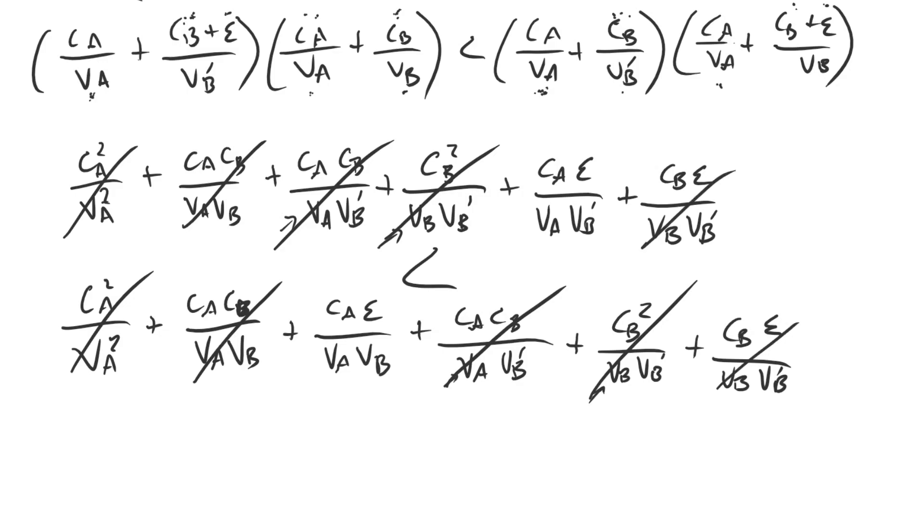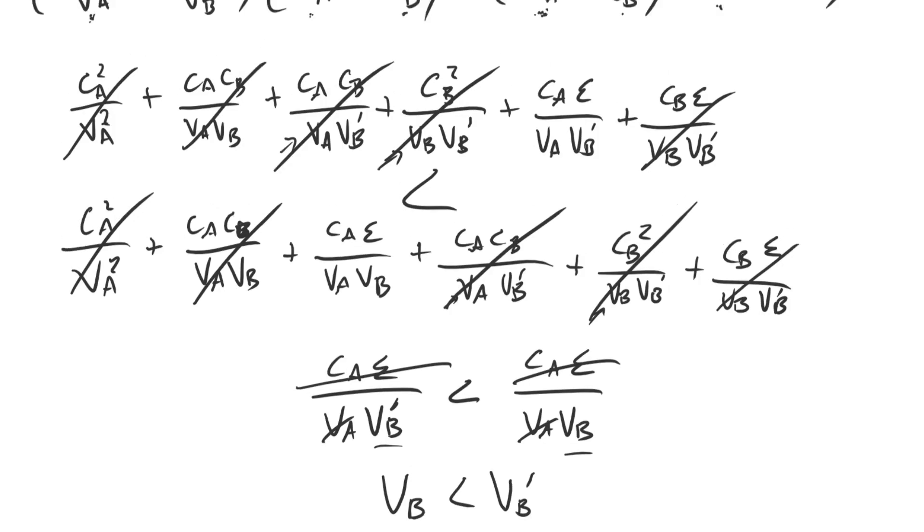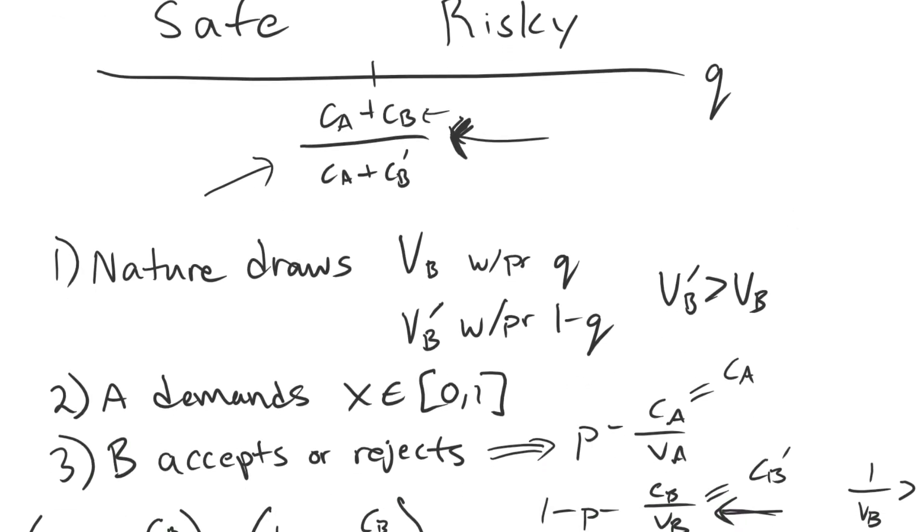We're left with just two terms that don't immediately cancel, although it's going to be very quickly solved. We have CA epsilon divided by VA VB prime less than CA epsilon VA VB. The numerators cancel out. The VAs cancel out. What doesn't cancel out is this VB prime and this VB. They're both positive values, so we can divide everything without flipping any inequalities. What we're left with is VB less than VB prime. If we scroll back far enough, we see that is, in fact, true.